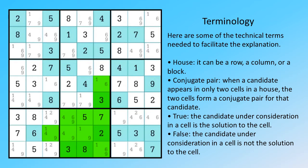Conjugate pair: when a candidate appears in only two cells in a house, the two cells form a conjugate pair for that candidate.